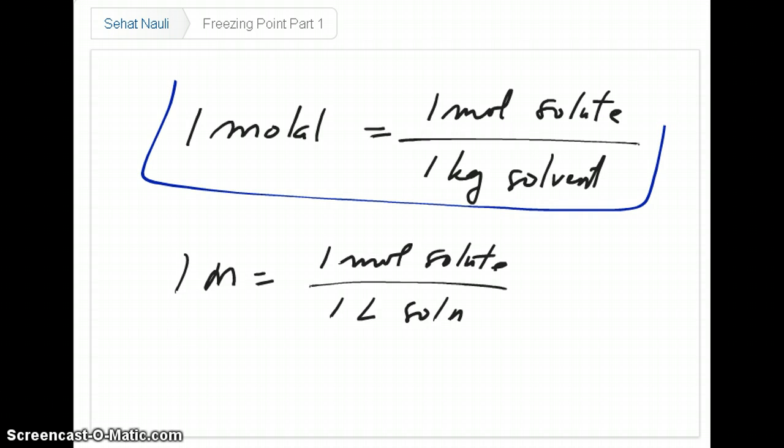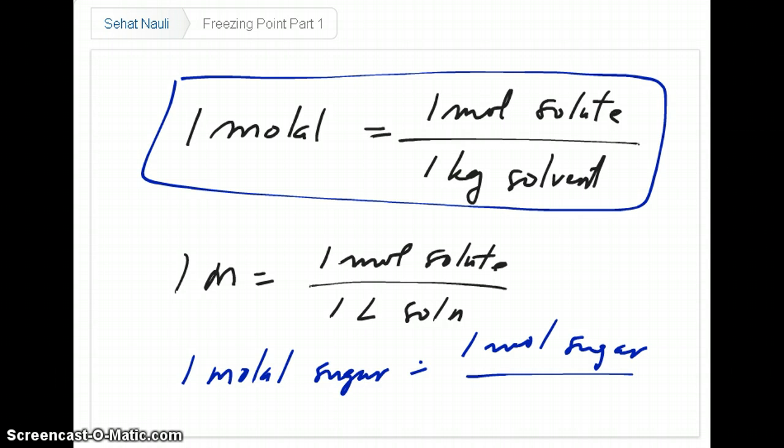Just like molarity is defined as one molar being equal to one mole of solute over one liter of solution, molality is also defined where one molal is equal to one mole of solute over one kilogram of solvent. For example, if your solute is sugar, one mole of sugar is going to be one mole of sugar over, in this case, if you dissolve it in water, one kilogram of water.